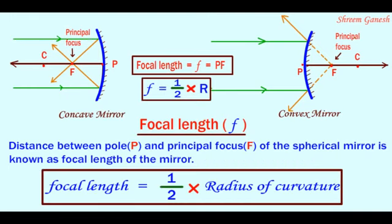Numerically, focal length is half of the radius of curvature.